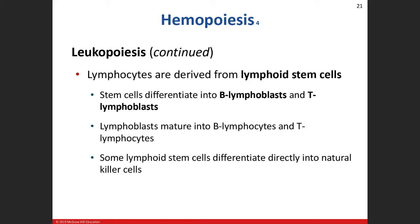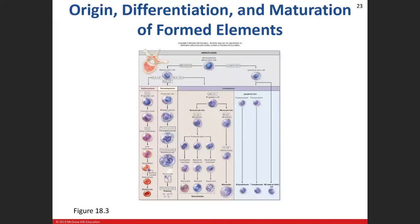For leukopoiesis — leuko means white blood cells — remember that when we have our pluripotent stem cell, instead of going towards the myeloid line, we have the lymphoid line, and that's going to be our lymphocytes with their own special type of stem cell. All other cells — platelets, red blood cells, granulocytes, and monocytes — come from the myeloid stem cell line.